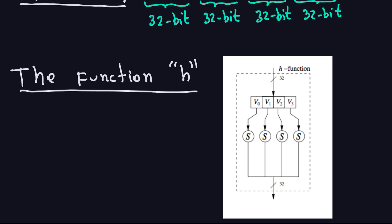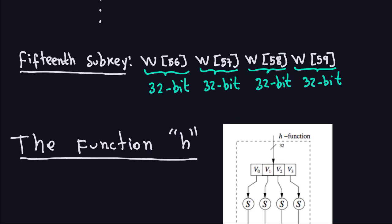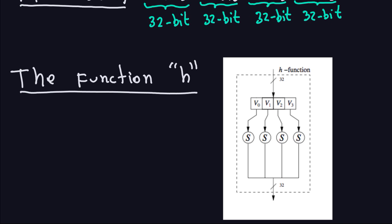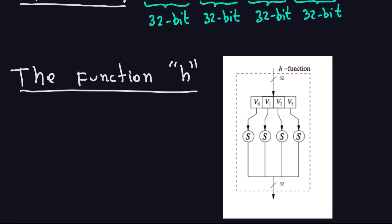That is basically all there is to say about the key schedule, because we have now described all the key schedules for all key lengths: 128, 192, and 256, with this last one having the special h function. The key schedules all depend on the key size, but every subkey will always be 128-bit, regardless of what the initial key is. In the next video we'll continue looking at some other encryption topics. See you in the next video.